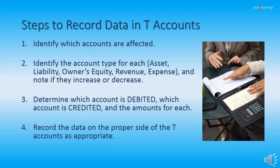We are going to review the four steps to record data in T-Accounts. Step 1: identify which accounts are affected — we will be using just two accounts per transaction. Step 2: identify the account type for each, whether it's an asset, liability, owner's equity, revenue, or expense, and note if they increase or decrease. Step 3: determine which account is debited, which is credited, and the amounts. When working with two accounts, one is debited and the other is credited. Step 4: record the data on the proper side of the T-Accounts.